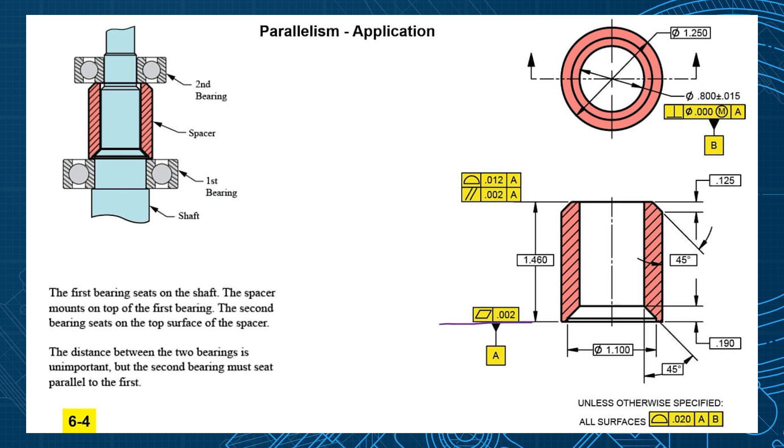So we selected A as this bottom surface where it mounts in the assembly, put a nice flatness tolerance on there. The ideal spacing between the bearings is 1.460. To control that variation we use profile tolerance to control the location, the height of that surface.